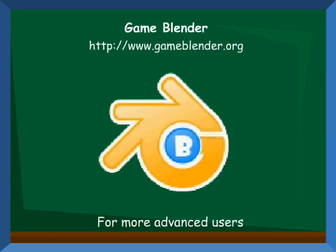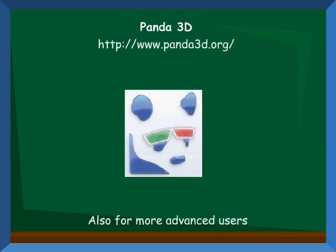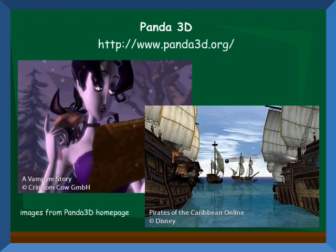Blender is a 3D modeling program, and it has a game engine counterpart called GameBlender. It's free and it uses Python scripting. Panda3D is another engine for making 3D games, and it uses Python as a scripting language as well. It is also free. Some games that were made with it are Vampire Story and Pirates of the Caribbean Online.